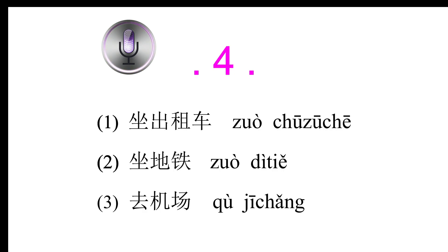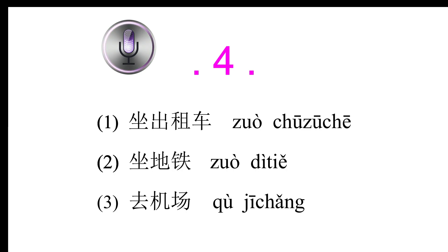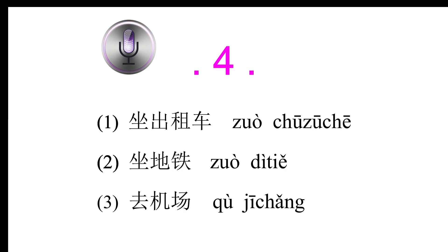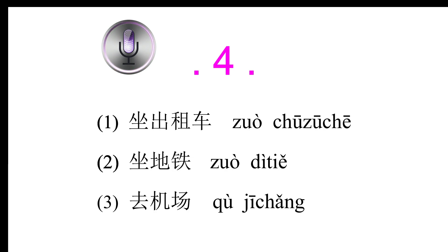Conversation 4: 你怎么回家？出租车都停在五号门，机场有地铁二号线。我和你一起去坐地铁。Question: 你的要做什么？